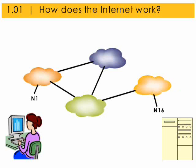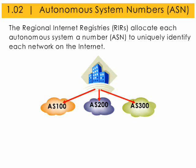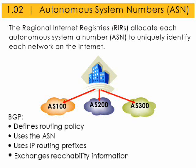Network operators share network reachability information through BGP with other BGP systems. BGP runs on selected switches by maintaining a table of IP networks or prefixes called the Routing Information Base, the RIB or routing table, which designates reachability among routing domains or autonomous systems. The regional internet registries allocate each autonomous system a number, the ASN, to uniquely identify each network on the internet.